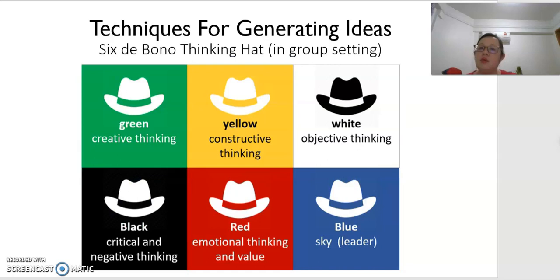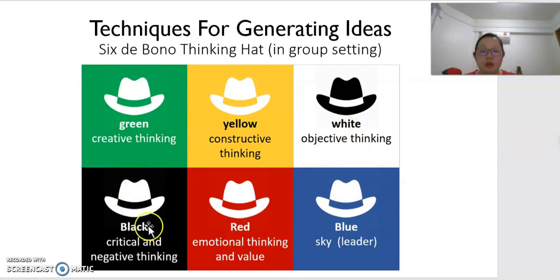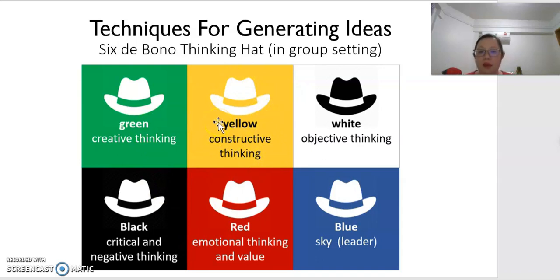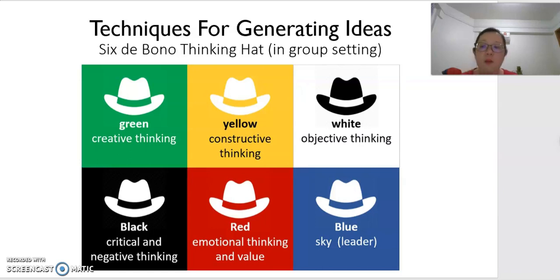The six thinking hats technique is a very interesting method for group discussion. Different members wear different colored hats: the leader wears a blue hat to manage the discussion, a green hat represents creative thinking, and a yellow hat represents constructive thinking. You discuss the issue from different points of view simultaneously. After one round, members swap hats so different people think about different things.